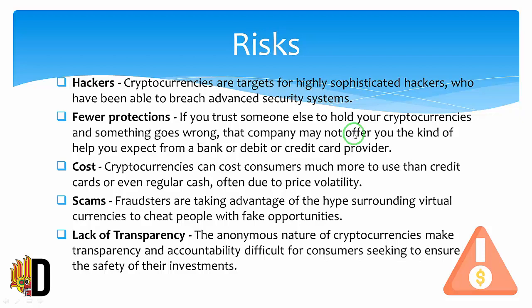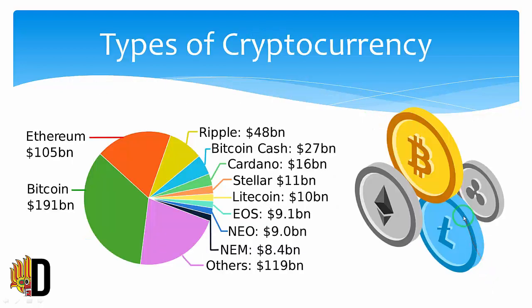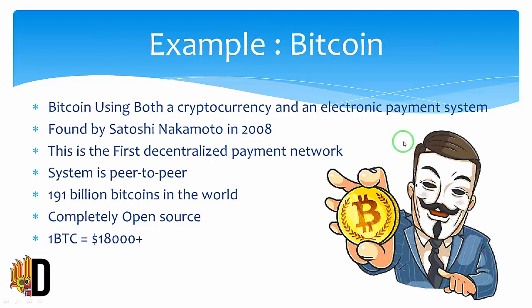Now we talk about types of cryptocurrencies. The world's most famous cryptocurrency is Bitcoin, then Ether. There are 191 billion Bitcoin in the world. There are so many cryptocurrencies in our world, but we normally use Ether and Bitcoin.